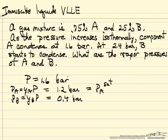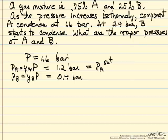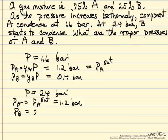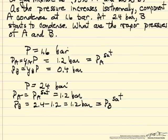This is the point where A starts coming out of the gas phase. As we continue to compress, we can't increase the partial pressure of A above 1.2 bar. So when we get to a total pressure of 2.4 bar, the pressure of A is now its saturation pressure — still 1.2 bar — because liquid A is already present. Therefore, the pressure of B must be 2.4 minus 1.2, which is also 1.2 bar. Since this is the partial pressure at which B is condensing, this must also be the saturation pressure of B at this temperature.